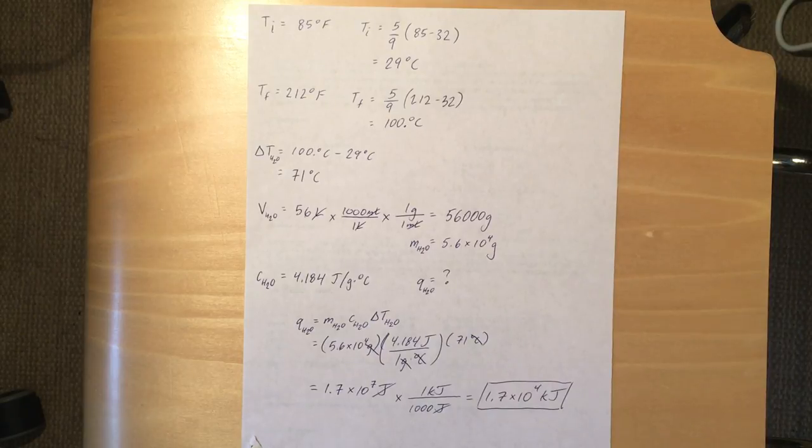So in order to do this, you're going to use the specific heat equation. So Q equals MC delta T. And we've solved for all of those variables already.